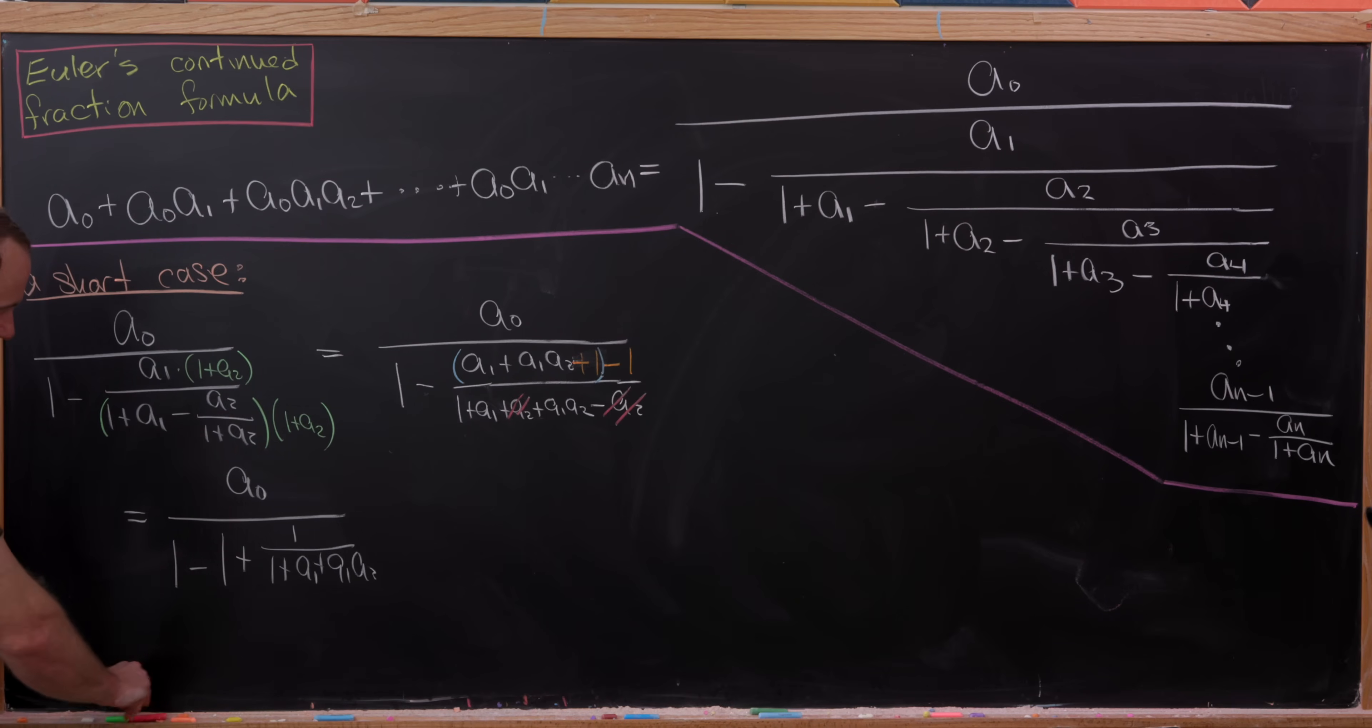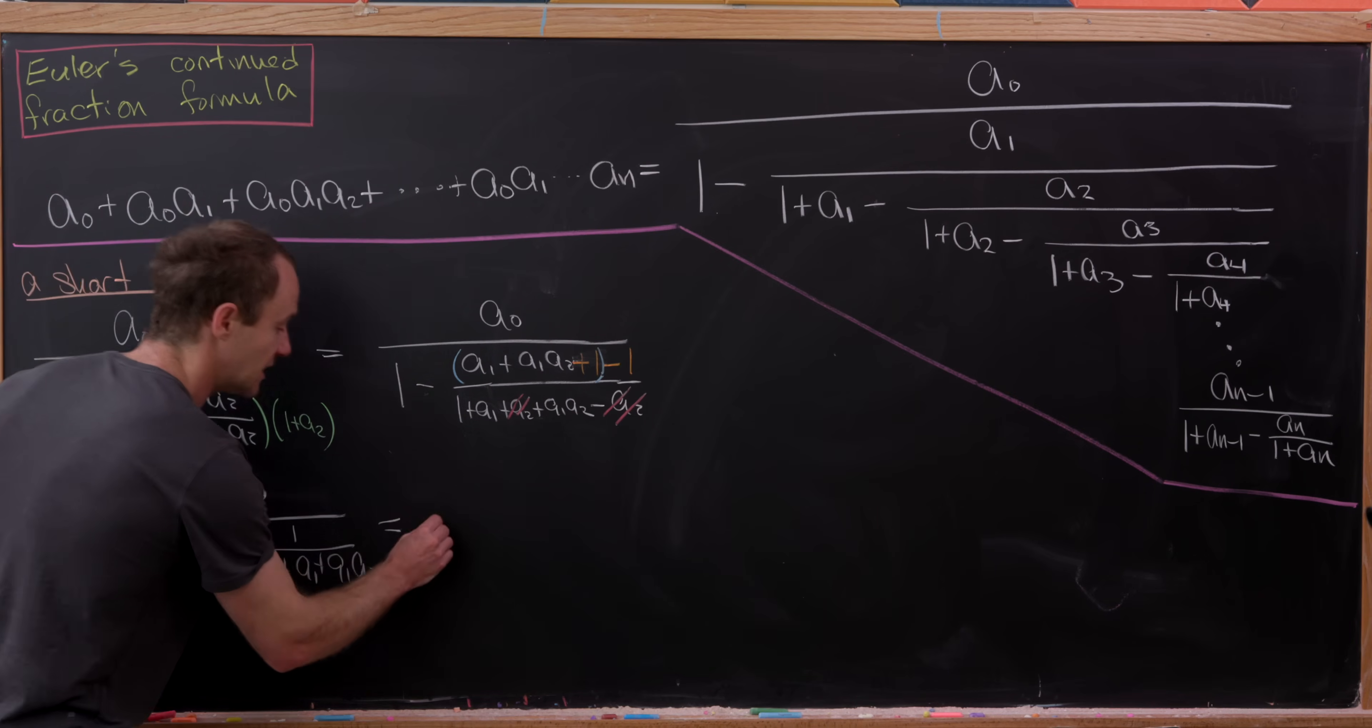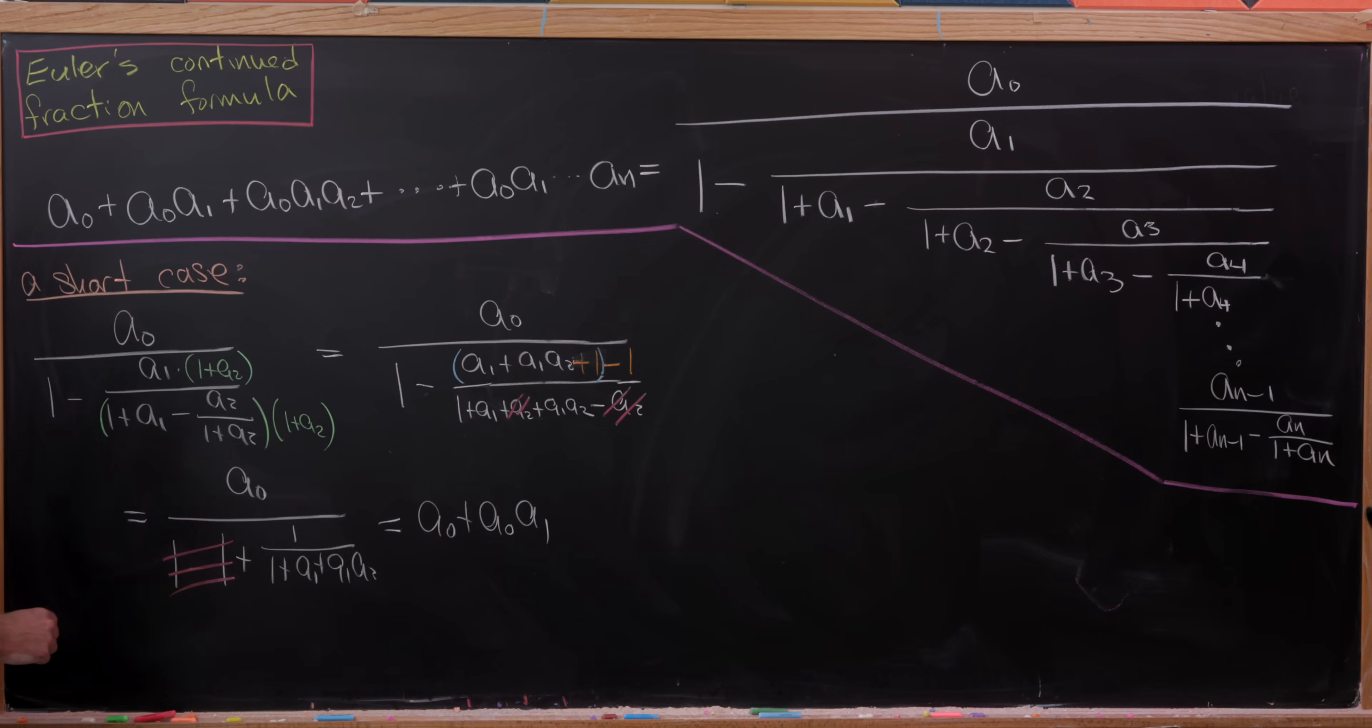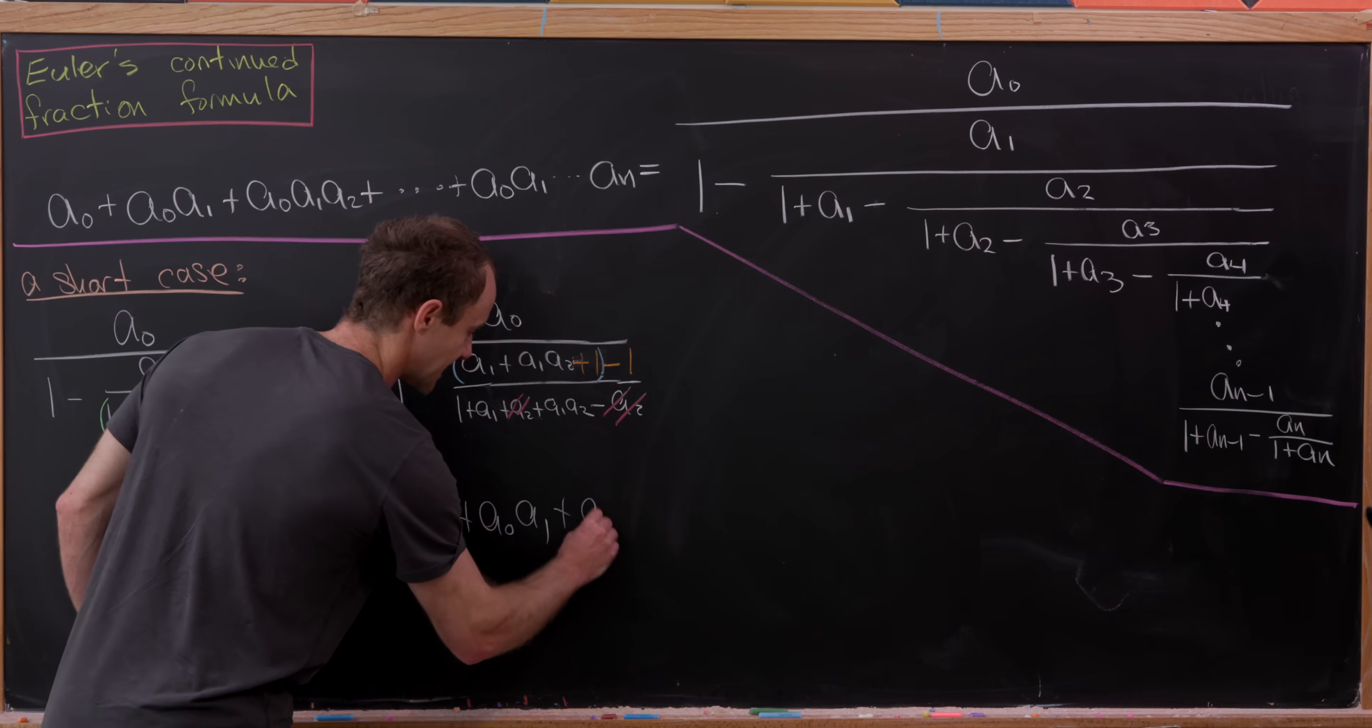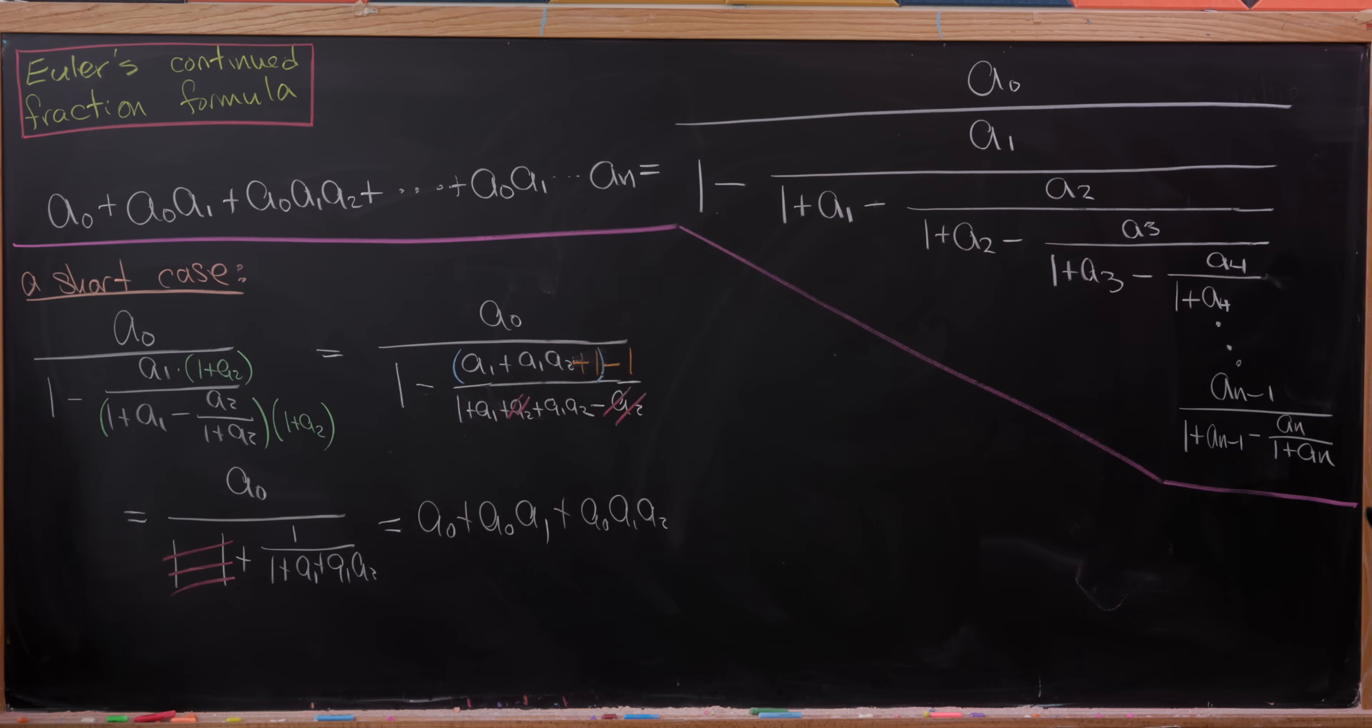But now we can see it's all about to happen. We've got one minus one. And then we'll flip this fraction up to a reciprocal to multiply into what we have right here, leaving us with exactly what we want. So we've got a0 plus a0 times a1 plus a0 times a1 times a2. So there we saw it happen.